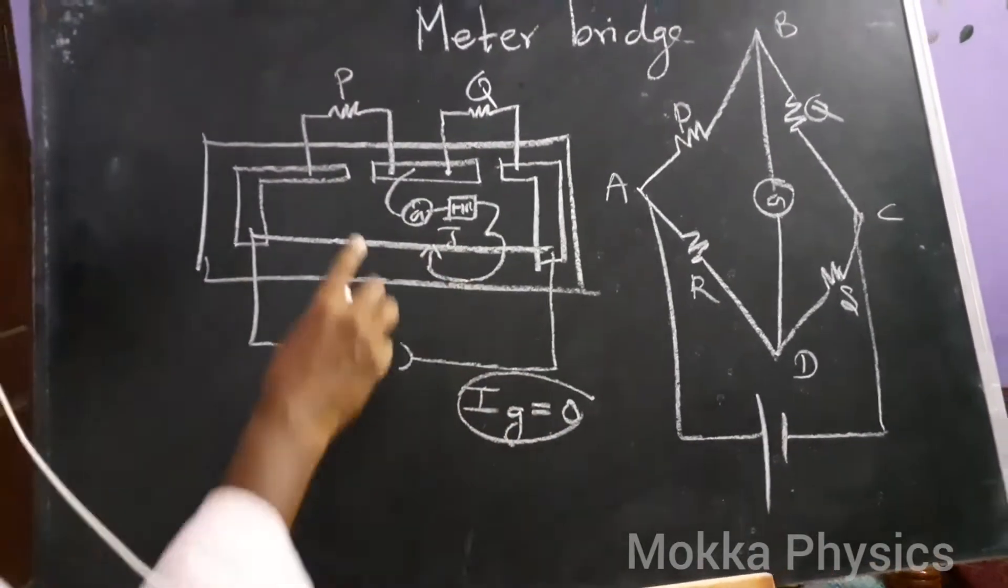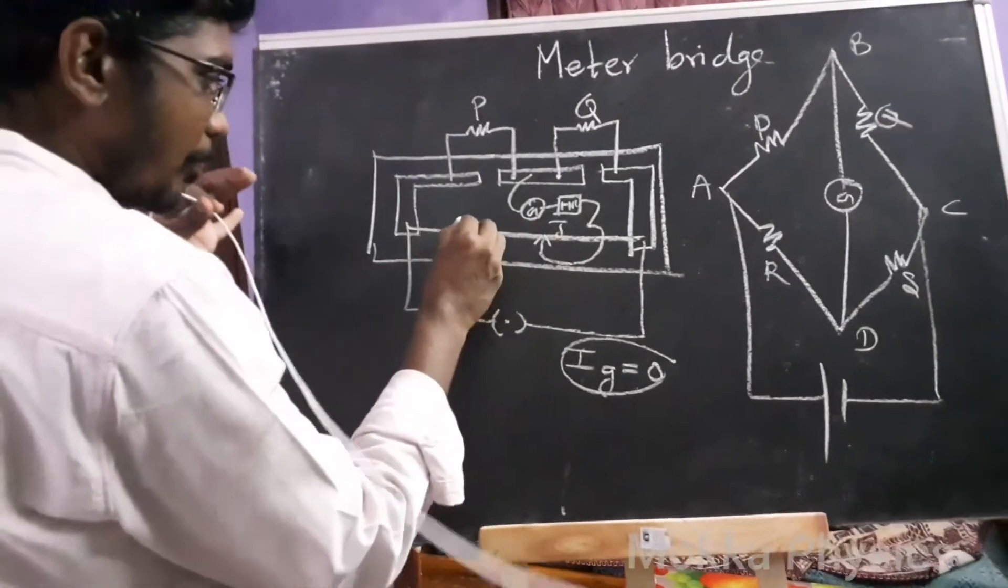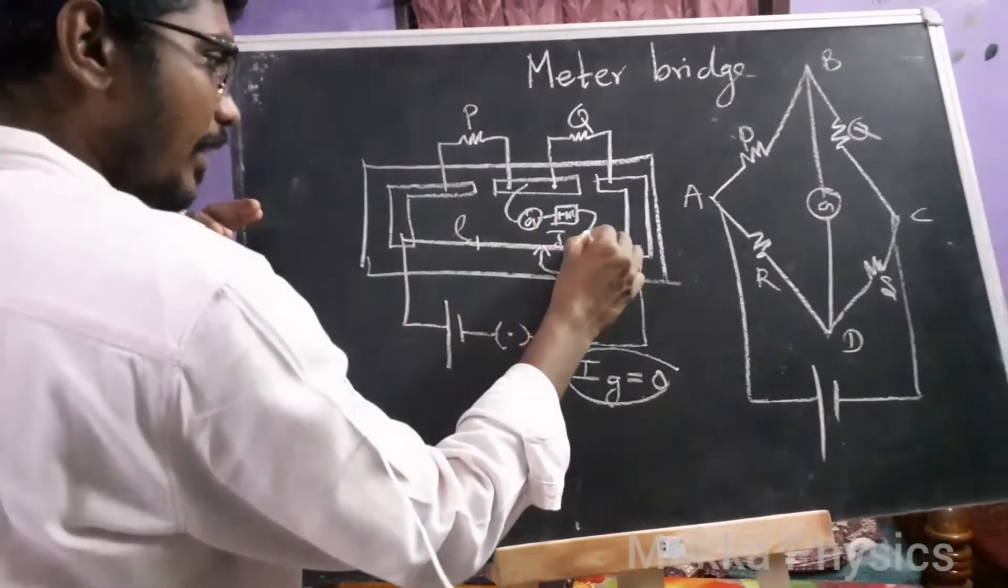In this condition, let's note the balancing length. If it is L1, the remaining length is L2.